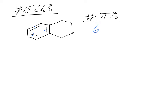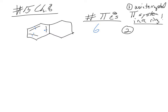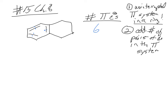We've got to harken back to our rules for aromaticity. The first rule is an uninterrupted pi system in a ring — it has to be in a ring. The second rule is an odd number of pairs of electrons in the pi system. So in this case, is there an uninterrupted pi system in a ring?